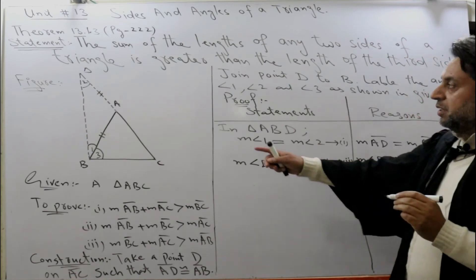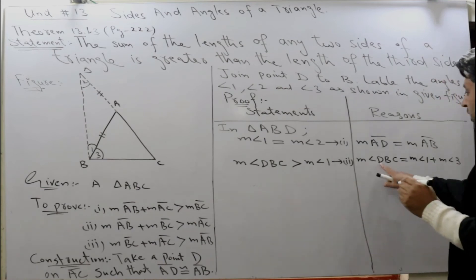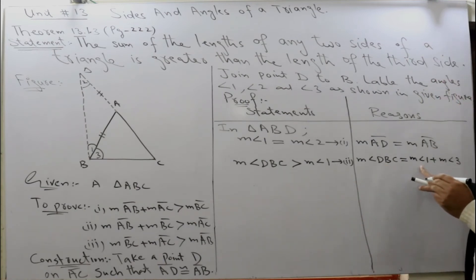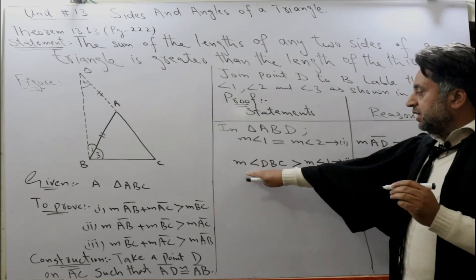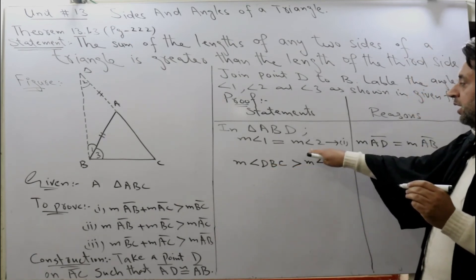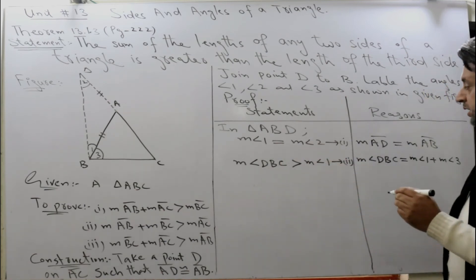Since angle DBC equals angle 1 plus angle 3, the measurement of angle DBC is greater than the measurement of angle 1. It means that measurement of angle DBC is also greater than angle 2, because angle 1 and angle 2 are equal.